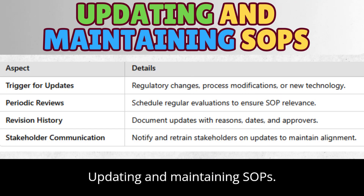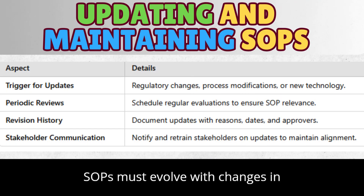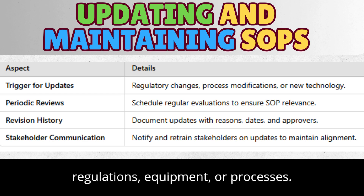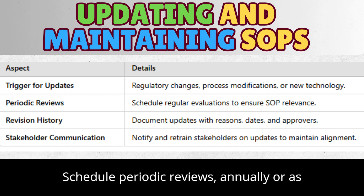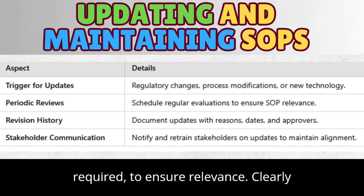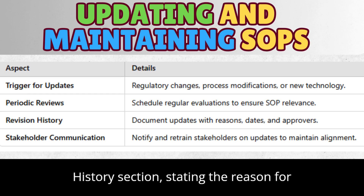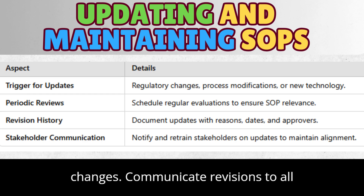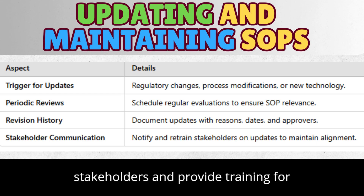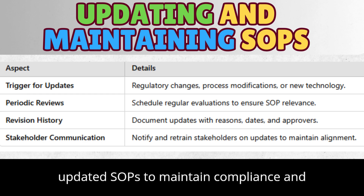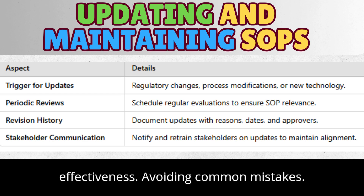Updating and maintaining SOPs: SOPs must evolve with changes in regulations, equipment, or processes. Schedule periodic reviews, annually or as required, to ensure relevance. Clearly document any updates in the Revision History section, stating the reason for changes. Communicate revisions to all stakeholders and provide training for updated SOPs to maintain compliance and effectiveness.